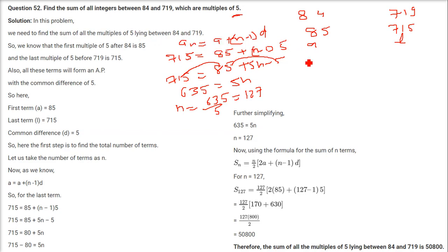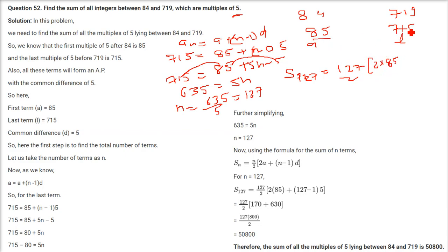To find the sum of all those integers, S₁₂₇ = (127/2) × [2×85 + (127−1)×5] = (127/2) × [170 + 126×5]. Solving this expression gives the result 50800.